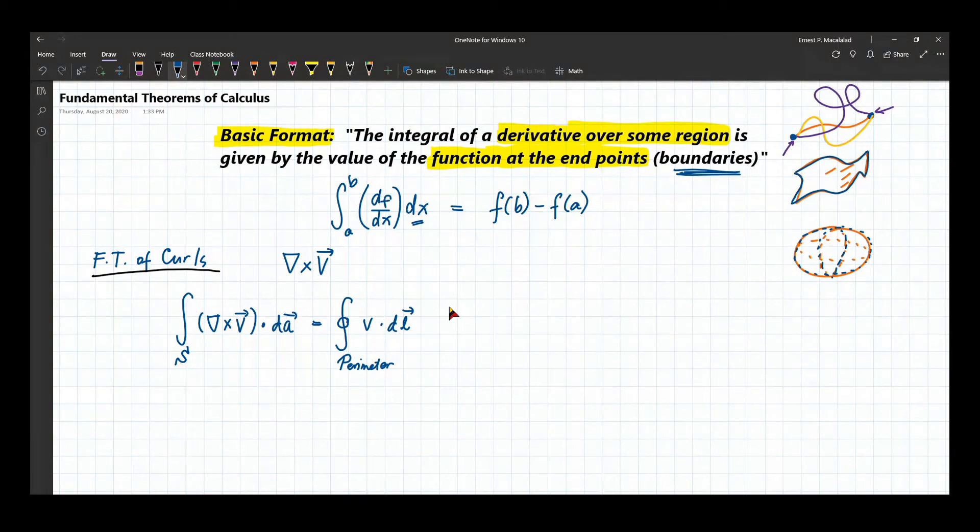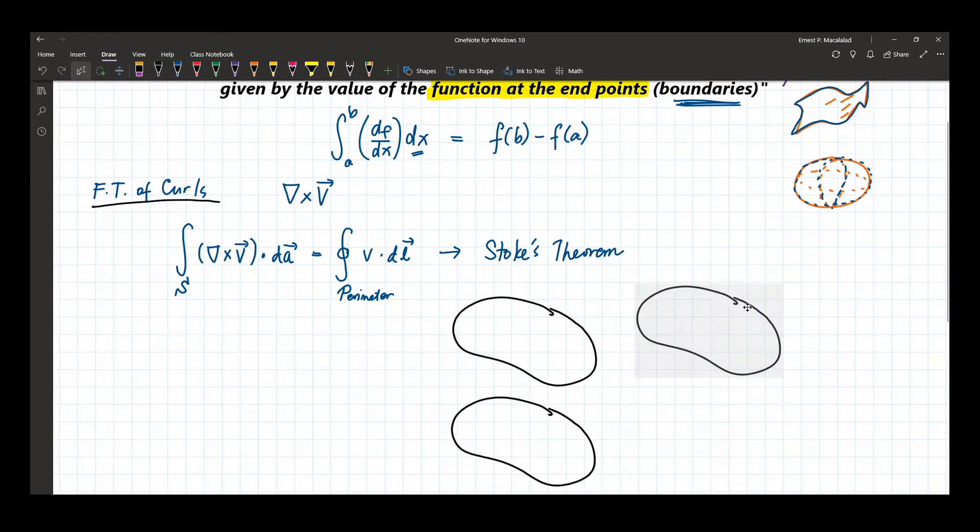We call this the Stokes theorem. Now let me give you an illustration. So for example, we have this patch of surface. So let me, I just duplicated the patch of surface.